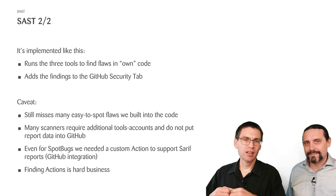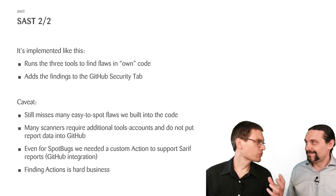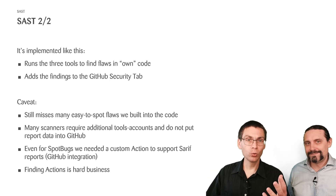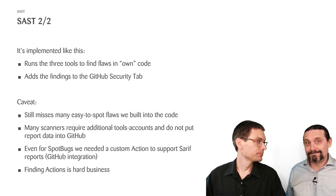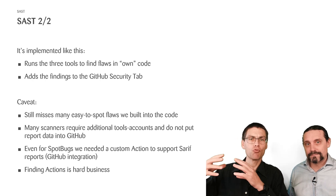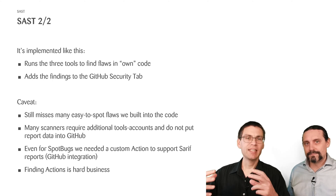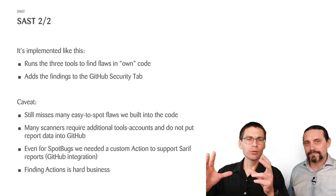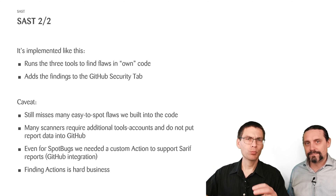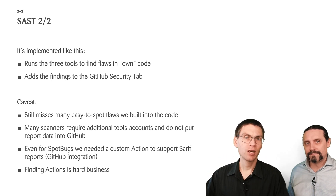SARIF, by the way, is the standardized report format for security scanners. And it was really hard to find what tools we would like to use for SAST. Nevertheless, what these three tools do for us is they run over our code and find security flaws within our code. They then add these findings into the GitHub security tab to provide a single point where we have all findings from all security tools together.